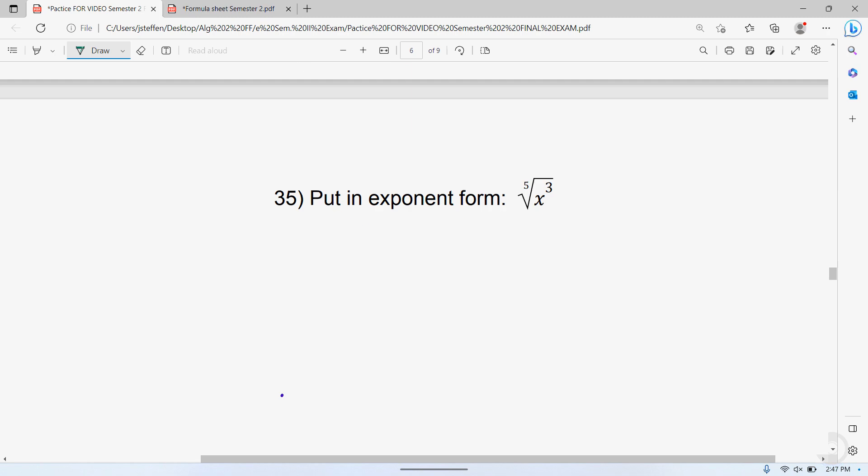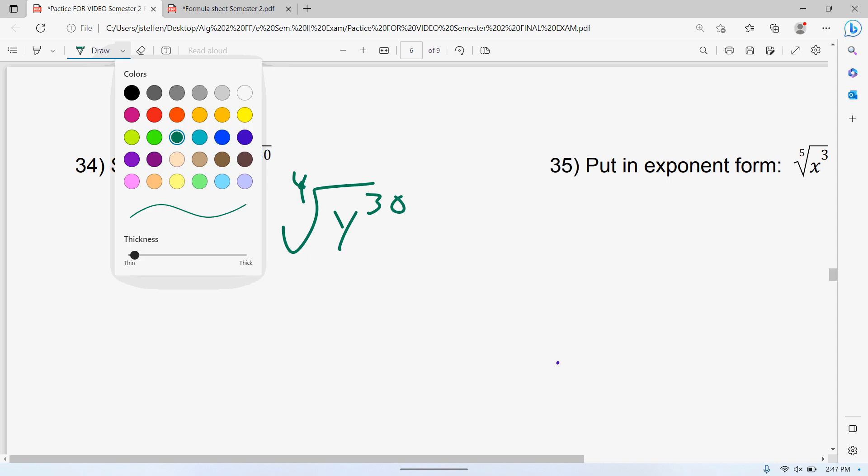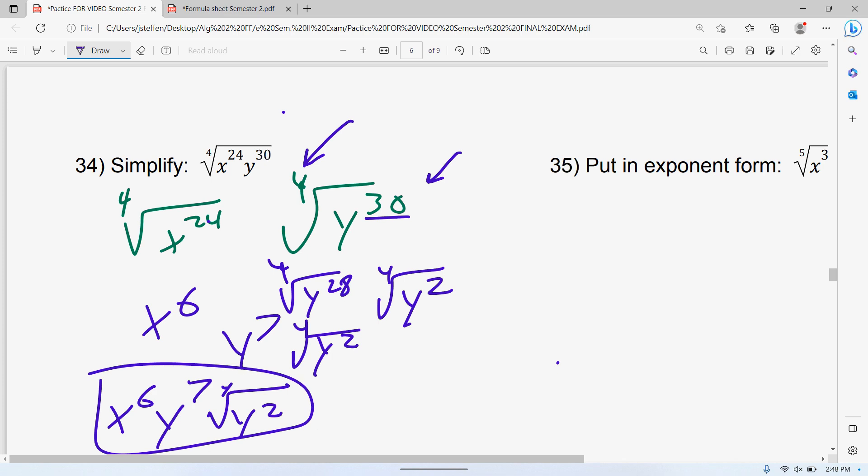34, simplify this out. Remember we're going to break it down first into two sections. We're going to do the x to the 24 and the y to the 30. If the x power divided by the index number works out nice and evenly, we're good. 24 divided by 4 is 6, so that cancels just to get x to the 6. Now if it doesn't combine evenly, you're going to have to find something that does. So the multiple of 4 as close to 30 as I can get without going over is 28. We can separate y to the 30 into y to the 28 times y squared. For 28 ys in that part, we need two more ys to complete the 30 we started with. So now we can divide 28 by 4. So x to the 6 times y to the 7 times the fourth root of y squared.